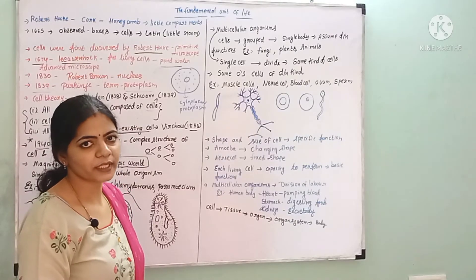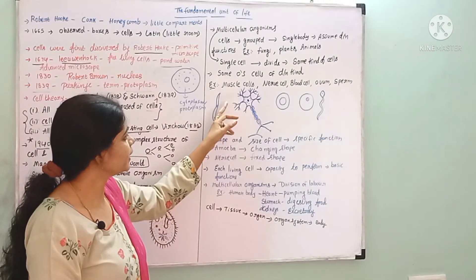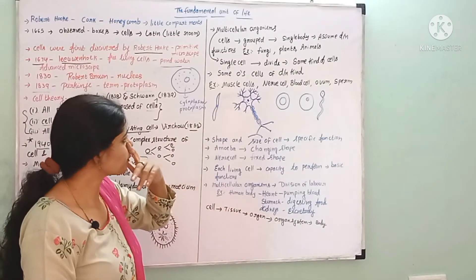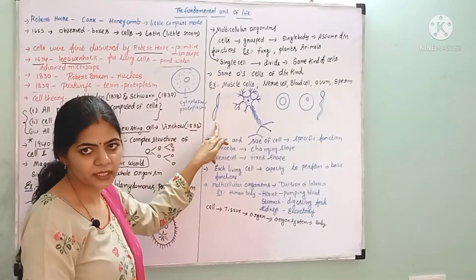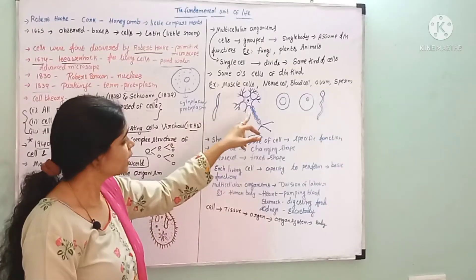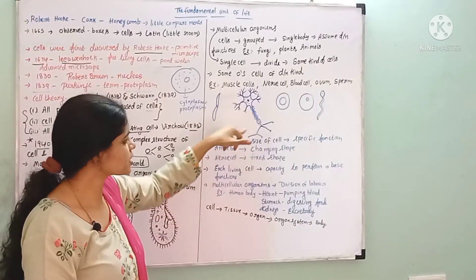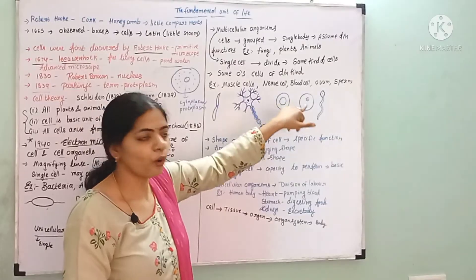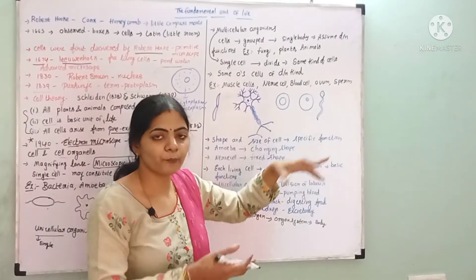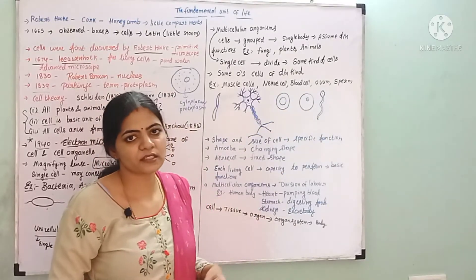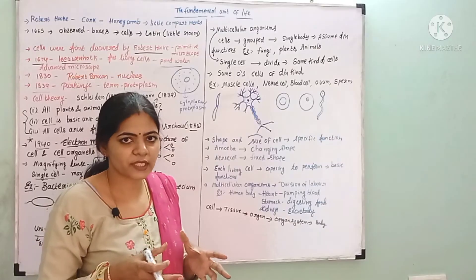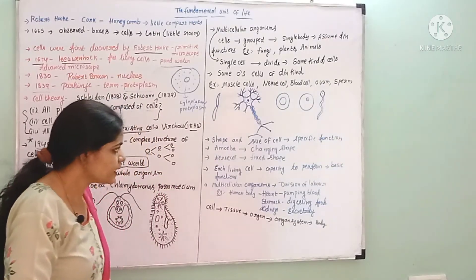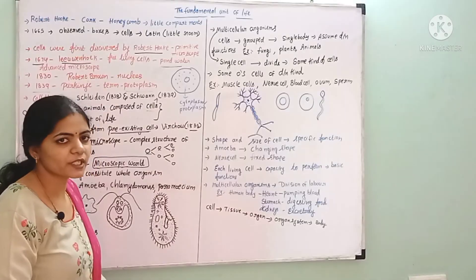In the human body there are different kinds of cells. For example, smooth muscle cells have one shape, nerve cells have another shape. There are also blood cells, sperm cells, bone cells, and fat cells — different types of cells with different shapes and sizes.